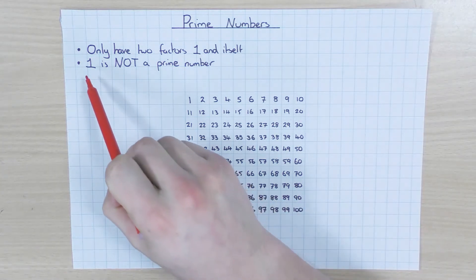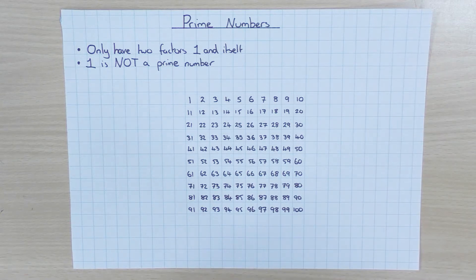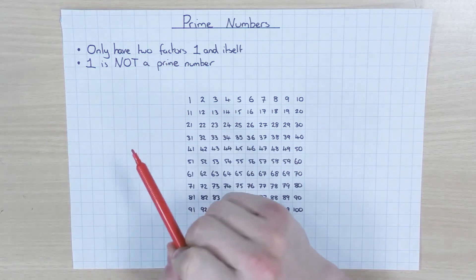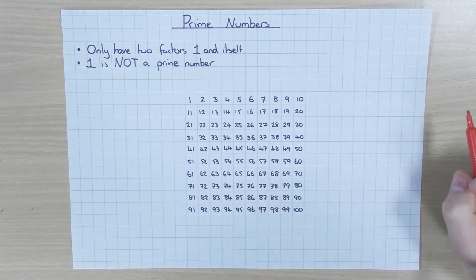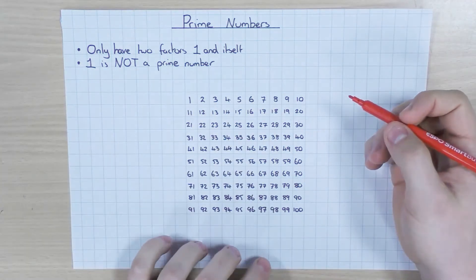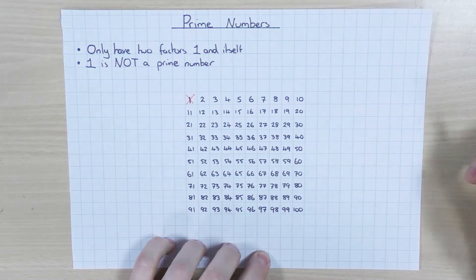The big question that people always ask is: is one a prime number? And it is not a prime number. The reason being is to be a prime number, as we just said, you need to have two factors. The number one only has one factor — one. So that's why it's not a prime number. So here's a list of numbers 1 to 100, and I'm going to cross off one straight away. One is not a prime number.